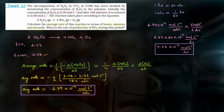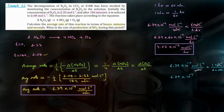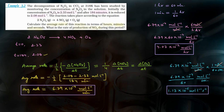Now calculate the average rate in terms of seconds. Starting again with 6.79 × 10⁻⁴ mol/L/min, multiply by (1 min / 60 seconds) to cancel minutes. This gives 6.79 × 10⁻⁴ ÷ 60, with units mol per liter per second. Solving this gives 1.13 × 10⁻⁵ mol per liter per second. Box this answer too.